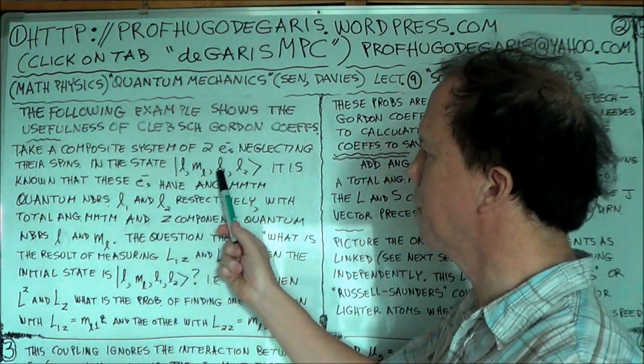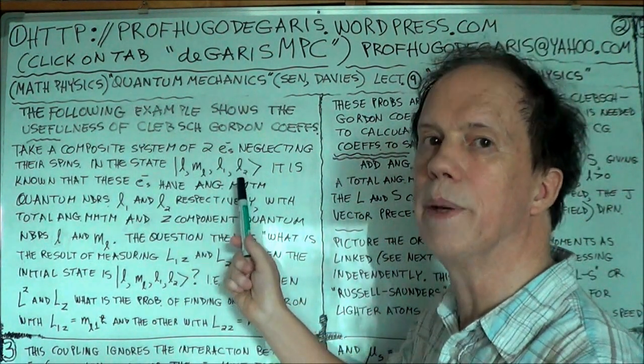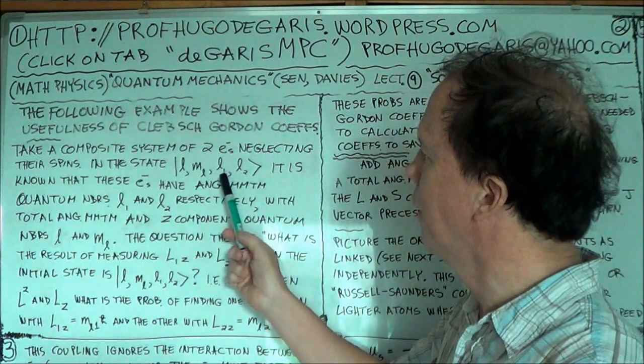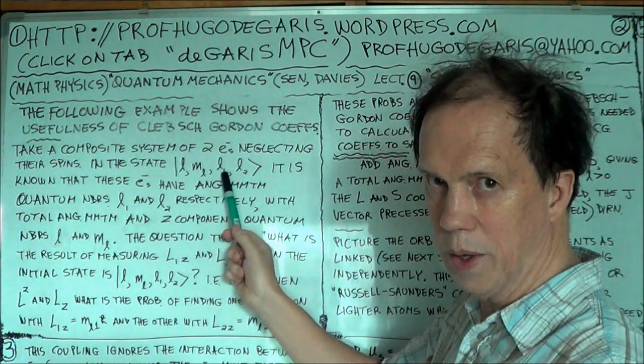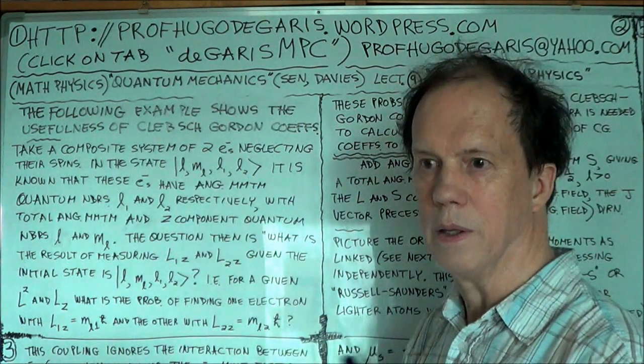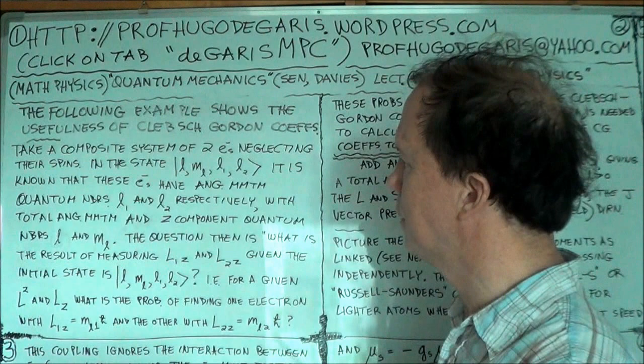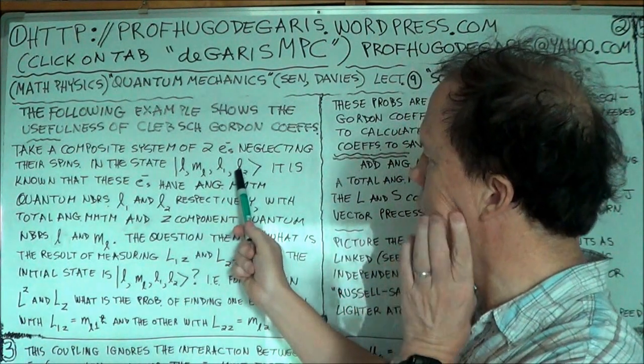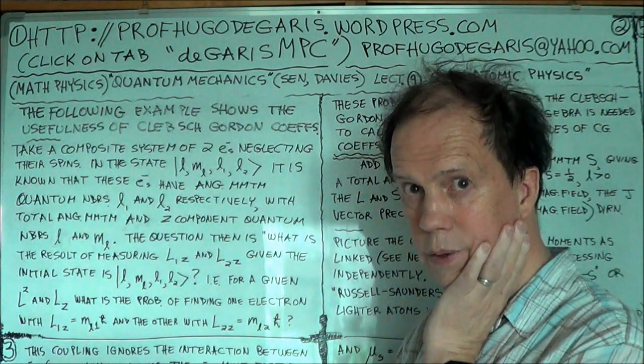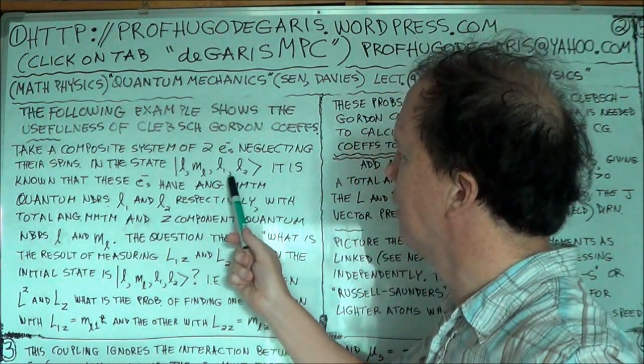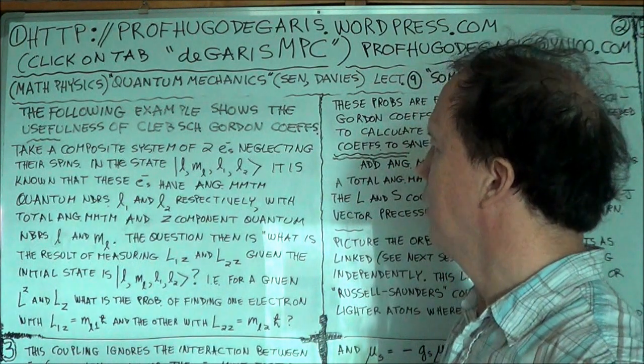But we're asked the question, what were the components, what would ml1 be? What would the component of angular momentum of electron one, l1, be along the z-axis? And similarly for electron two, what would its angular momentum component be along the z-axis? Okay, so like m1 and m2.